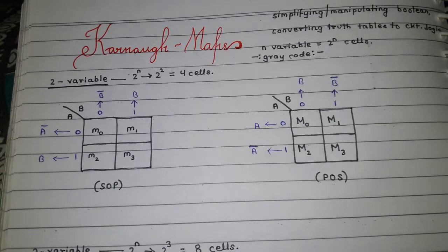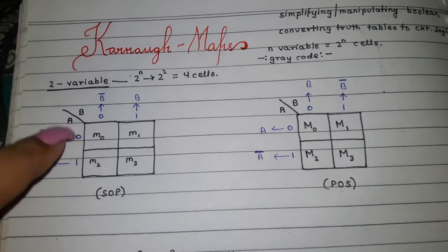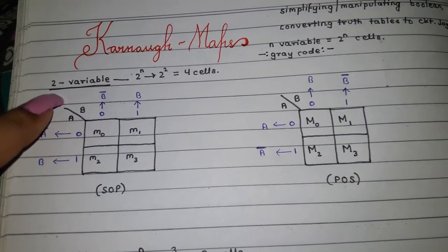Now, since we're having two variables here, suppose A and B, you're going to write like this. Just draw a straight line and write down your variables A, B, A bar, B bar.